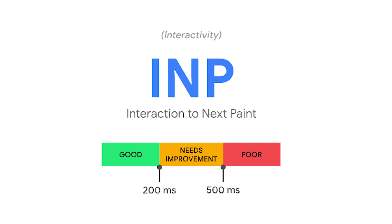A good score for INP should be less than or equal to 200 milliseconds. A poor score is over 500 milliseconds. Now let's dive into the specific actions you can take to enhance your INP.